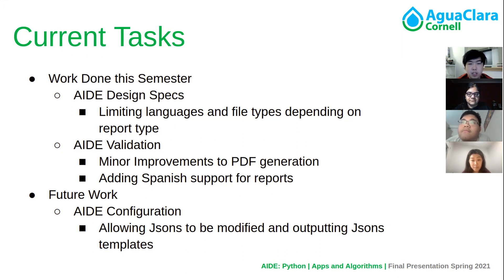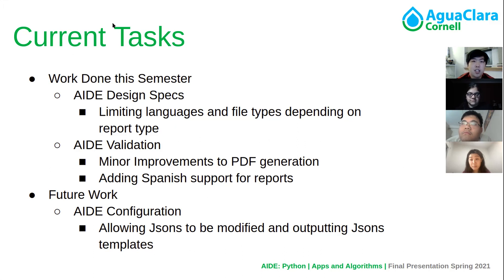For future semesters as well as the end of this semester, we are working on Aid Configuration, which is a new project that allows JSONs to be modified and attributes changed to output a JSON template. This is going to be important because we want to work with OnShape, which has a lot of JSON inputs and outputs, and we want to ensure that we can work with a certain template. We will discuss this in the following slides.